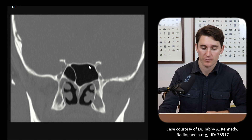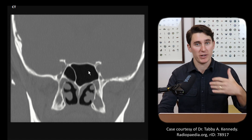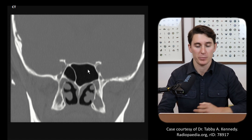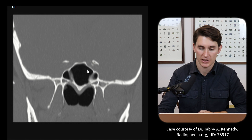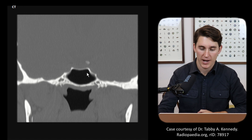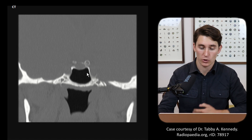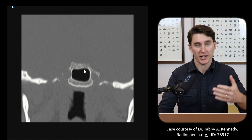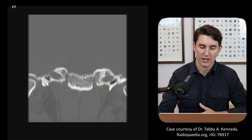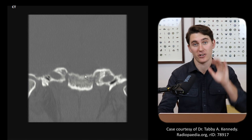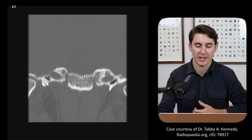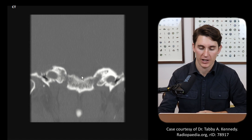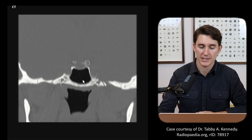Here we can see our sphenoid sinus at the level of the anterior clinoid processes. As we head more posteriorly we should see that dip into the sella turcica, which dips down, and then we come up to the dorsum sellae with our posterior clinoid processes. As we head even more posteriorly we'll see our clivus forming here — that's where our basilar artery will be on the other side of that clivus.